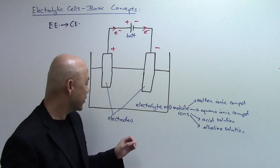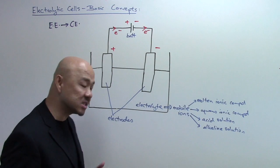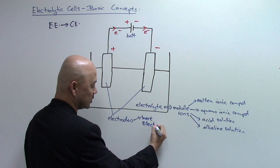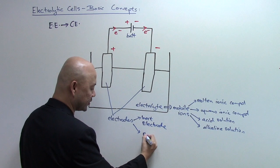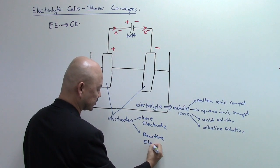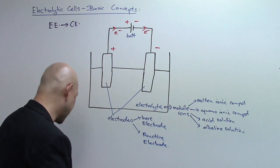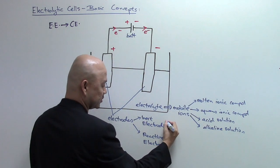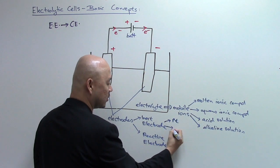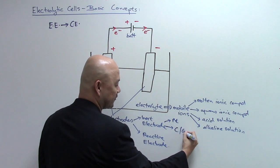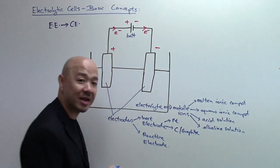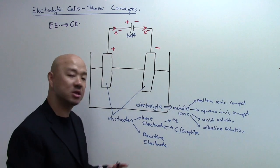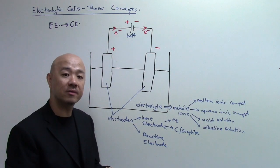Electrodes are solid surfaces for electron transfer, and there are two types: inert electrodes and reactive electrodes. For most chemistry syllabuses, the examples of inert electrodes are platinum metal and carbon in the form of graphite, because graphite is a conductor of electricity. These are normally the two inert electrodes discussed, especially in Singapore for the GCE O-Level syllabus.